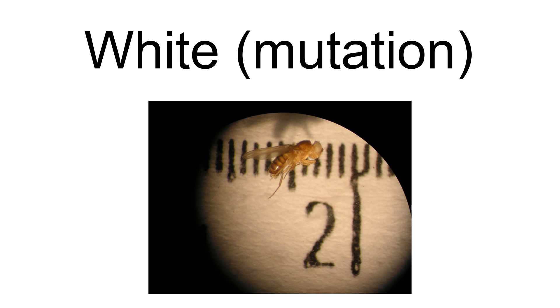Morgan named this trait white, now abbreviated W. Flies possessing the white allele are frequently used to introduce high school and college students to genetics.